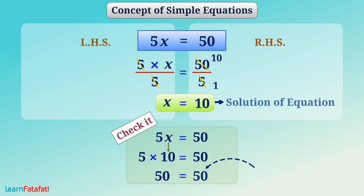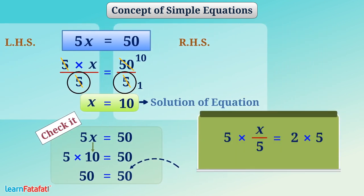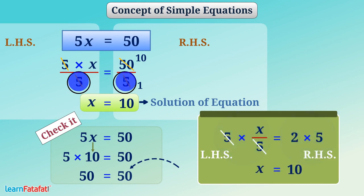Here, note that dividing by 5 on both side is the same as taking 5 on LHS to RHS by changing the multiplication operation to division. We call such a way of solving equation as transposing. We will understand more about it through some examples in the next video.